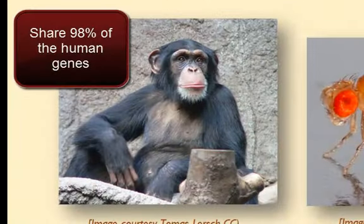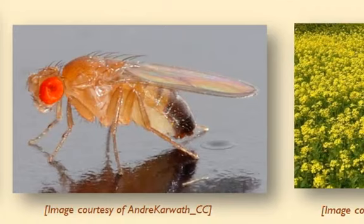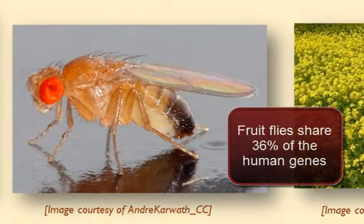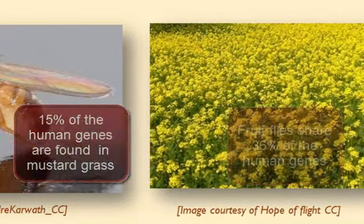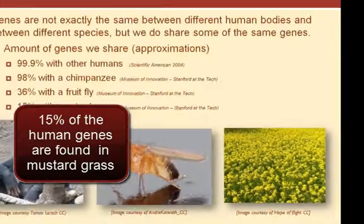Chimpanzees share about 98% of the same genes as humans. Therefore, the remaining 2% difference is what creates the many differences between humans and chimpanzees. Just for fun, let's look at a couple of other organisms: the fruit fly. Humans share 30% of our genes with the fruit fly, and 15% of our genes are found in mustard grass.